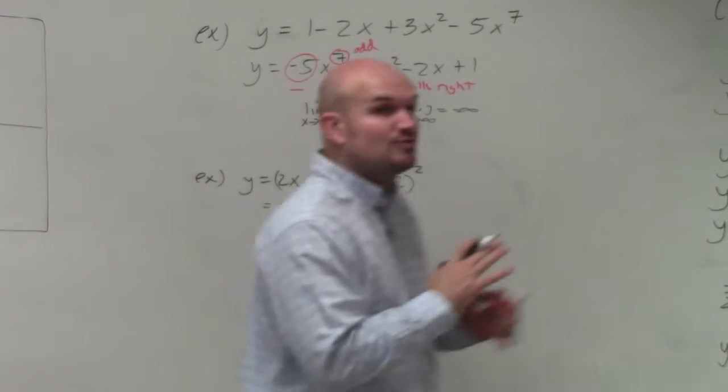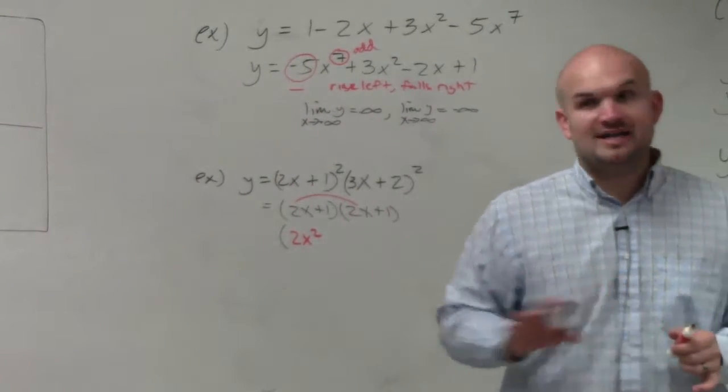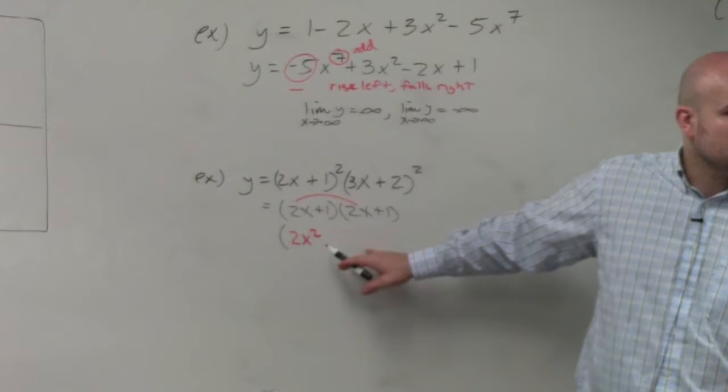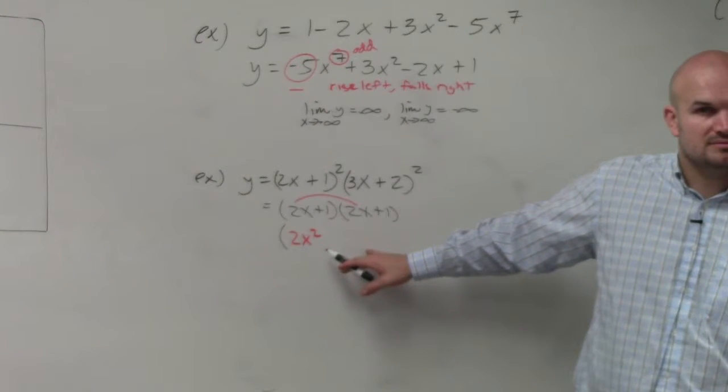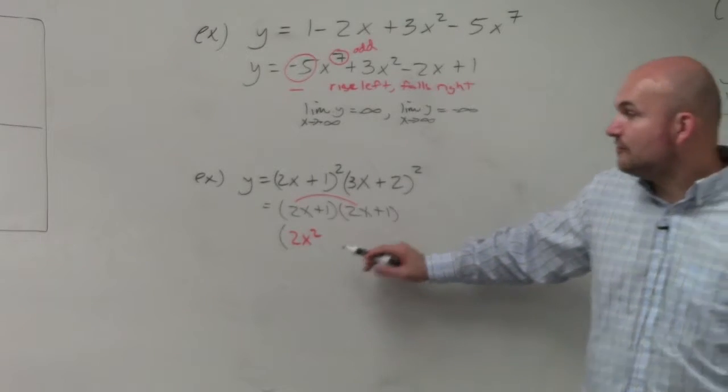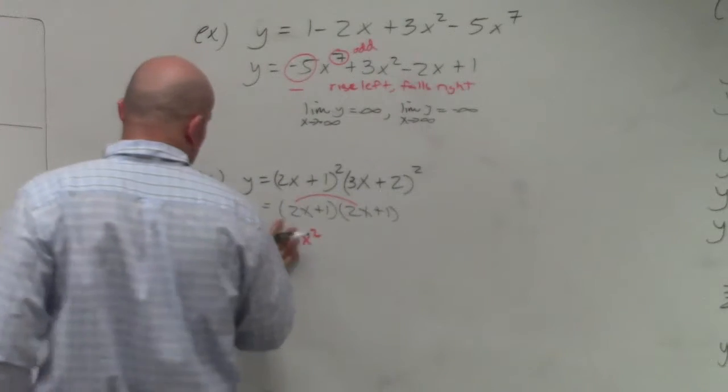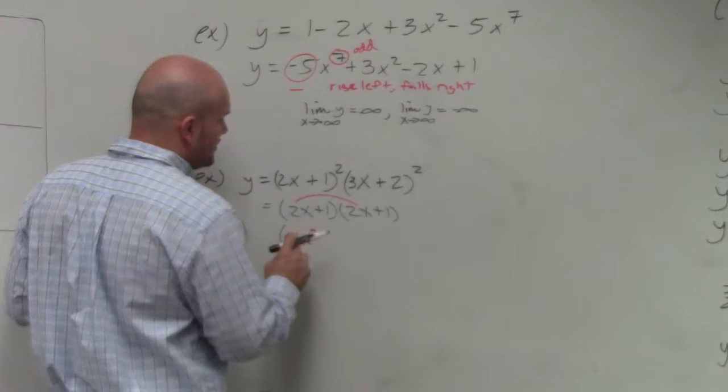Now, as you do the rest of this problem, is anything going to give you a higher degree than 2, than that 2x squared? It's definitely 4x squared, isn't it? Yes, it is. But is anything going to give you a higher degree than 2?